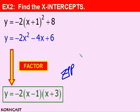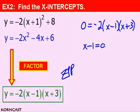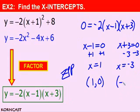Using the zero product property, the y-value must be 0 to find the x-intercepts, giving us 0 = −2(x − 1)(x + 3). From the zero product property, we set each factor equal to 0 and solve: x − 1 = 0 gives x = 1, so our first x-intercept is (1, 0). And x + 3 = 0 gives x = −3, so our other x-intercept is (−3, 0). To answer the question, the x-intercepts are (1, 0) and (−3, 0).